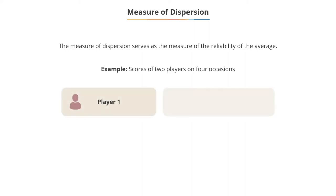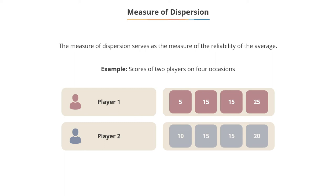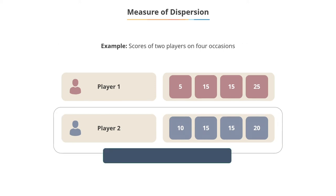If you look at the earlier example of the two data sets, and if the above values are scores of two different players on four occasions, who do you think is the more consistent player? It is the second player as their average score is more reliable.